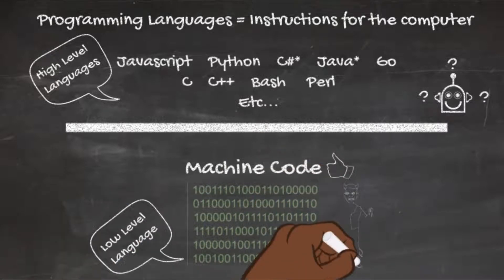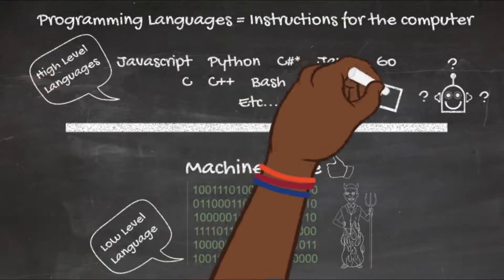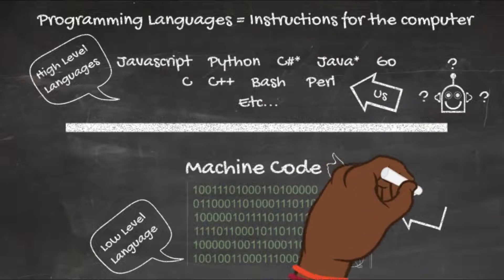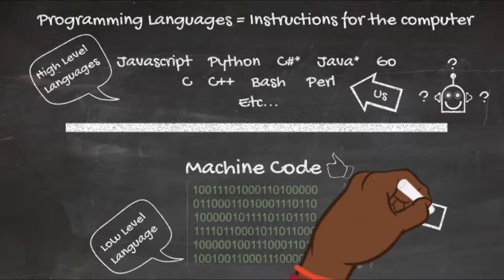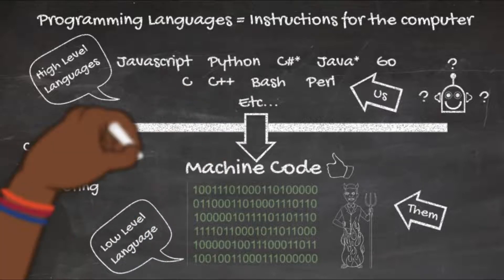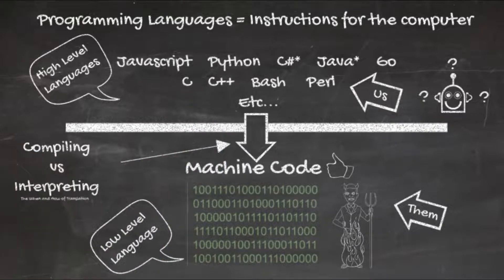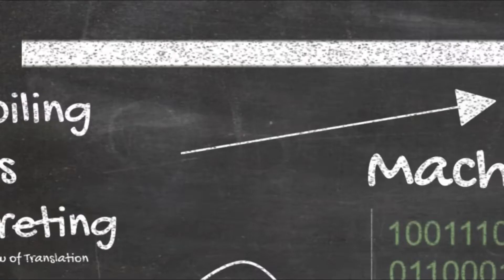What computers understand is something called machine code, which is typically represented by hexadecimal or binary — that's considered a low-level language. In fact, it's the lowest level, and it is specific to the operating system. So the machine code of a 64-bit Mac is different than the machine code of a Windows 64-bit. A translation has to occur to get from high-level to machine code, and that's the focus of this video.